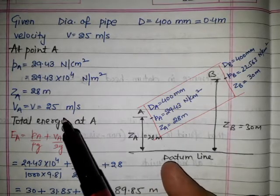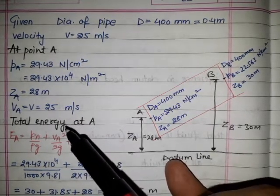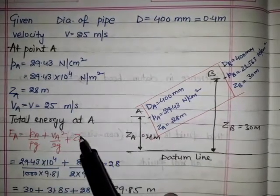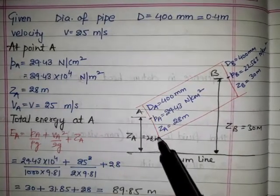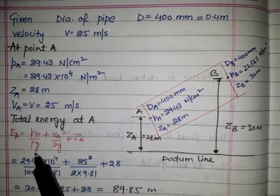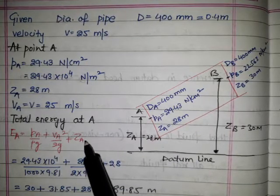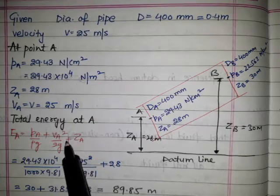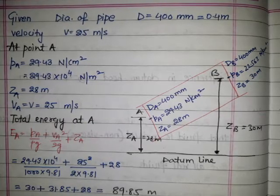Velocity remains the same because the diameter is the same. Total energy at A: applying Bernoulli's equation at section A, it becomes P_A over ρg plus V_A squared over 2g plus Z_A. Substituting all these values and after calculation...